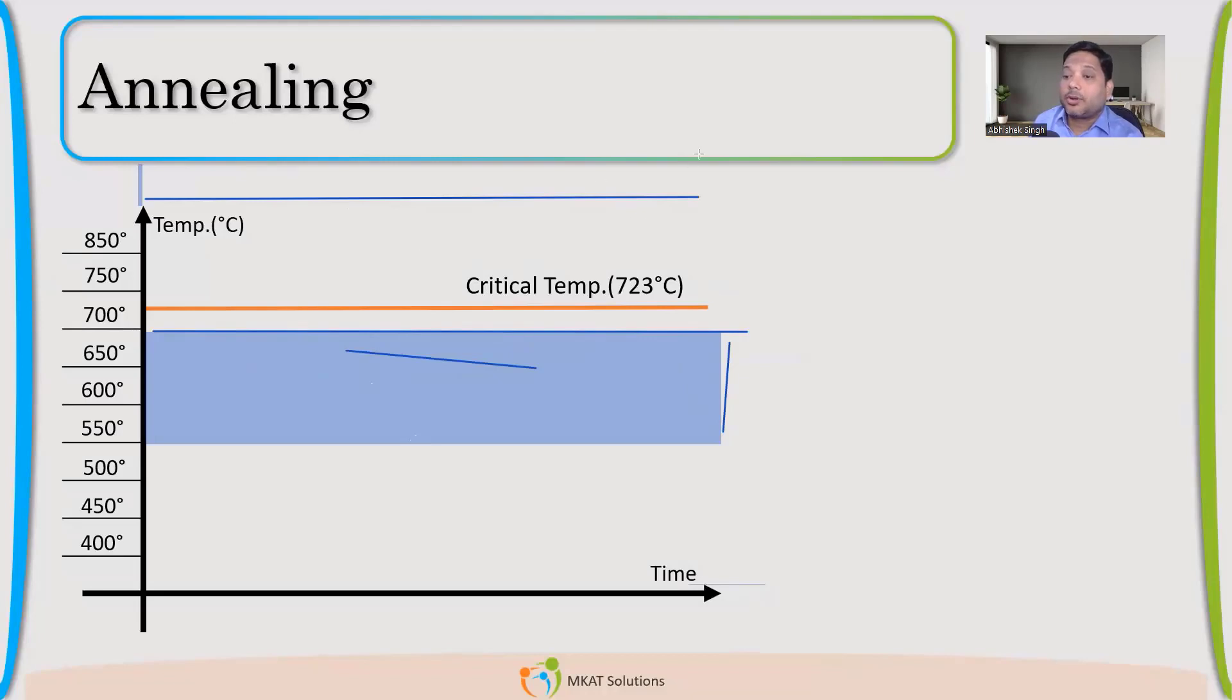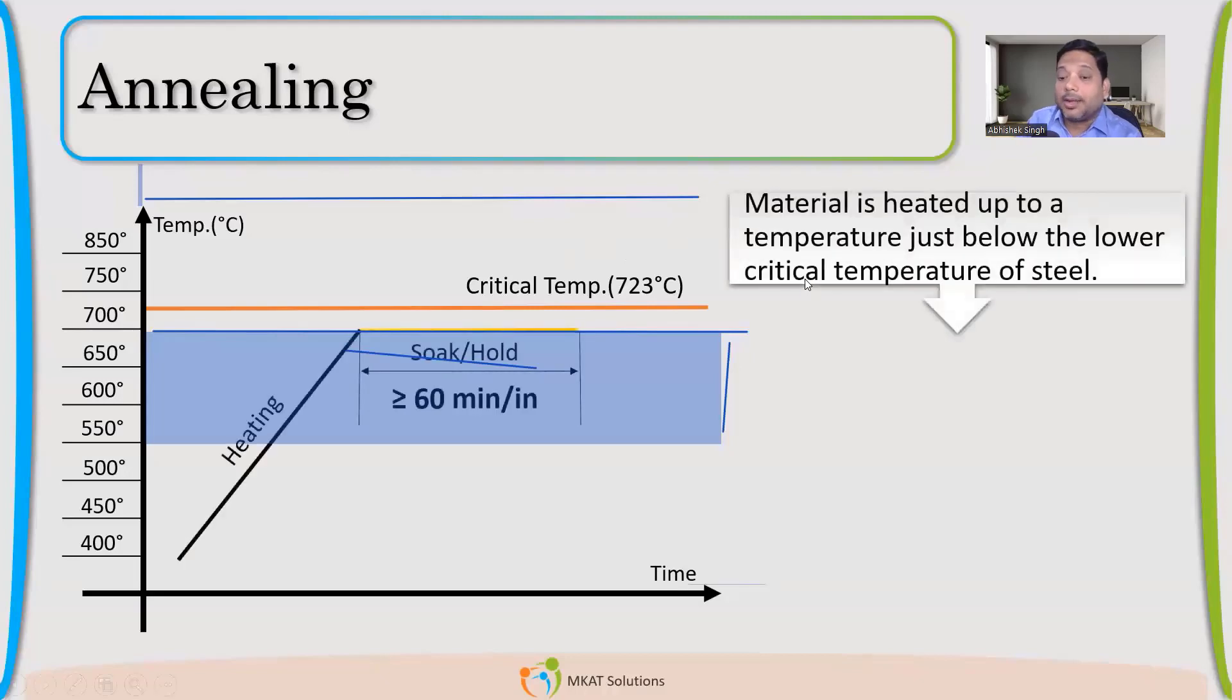Now let us talk about the first heat treatment, which is annealing. So annealing, actually annealing is not a final heat treatment process. Whenever you see annealing, we do as an intermediate heat treatment. After that, either you'll have to do tempering or like if you have to do machining.